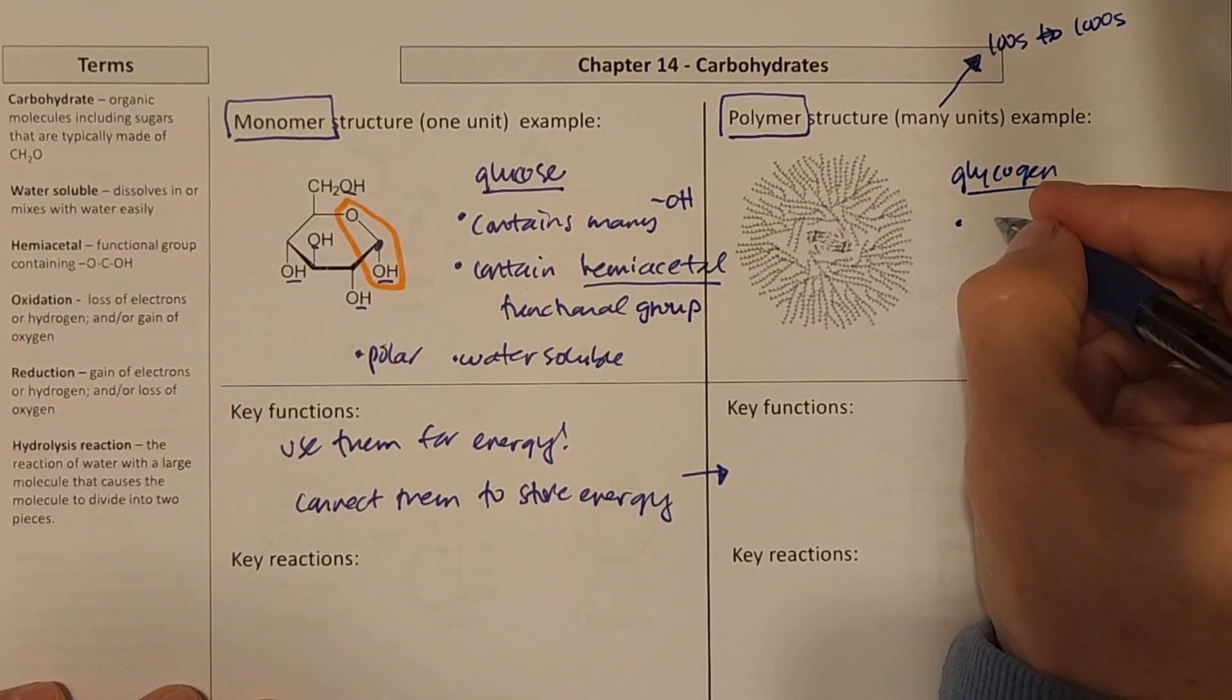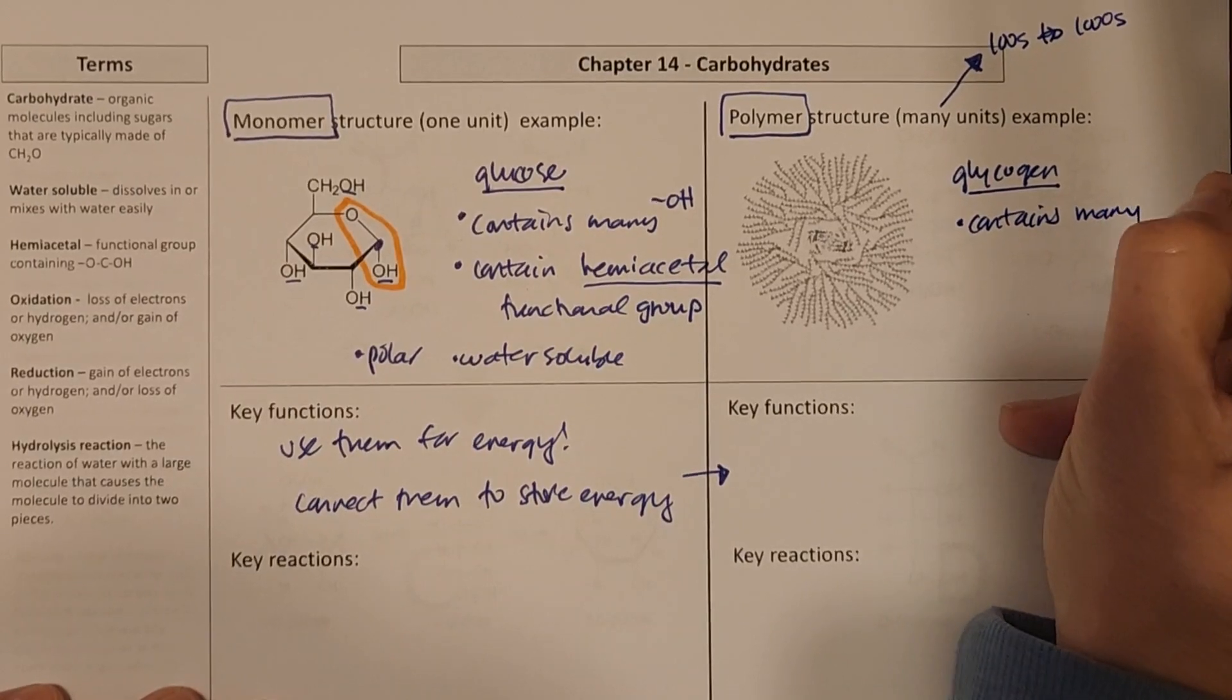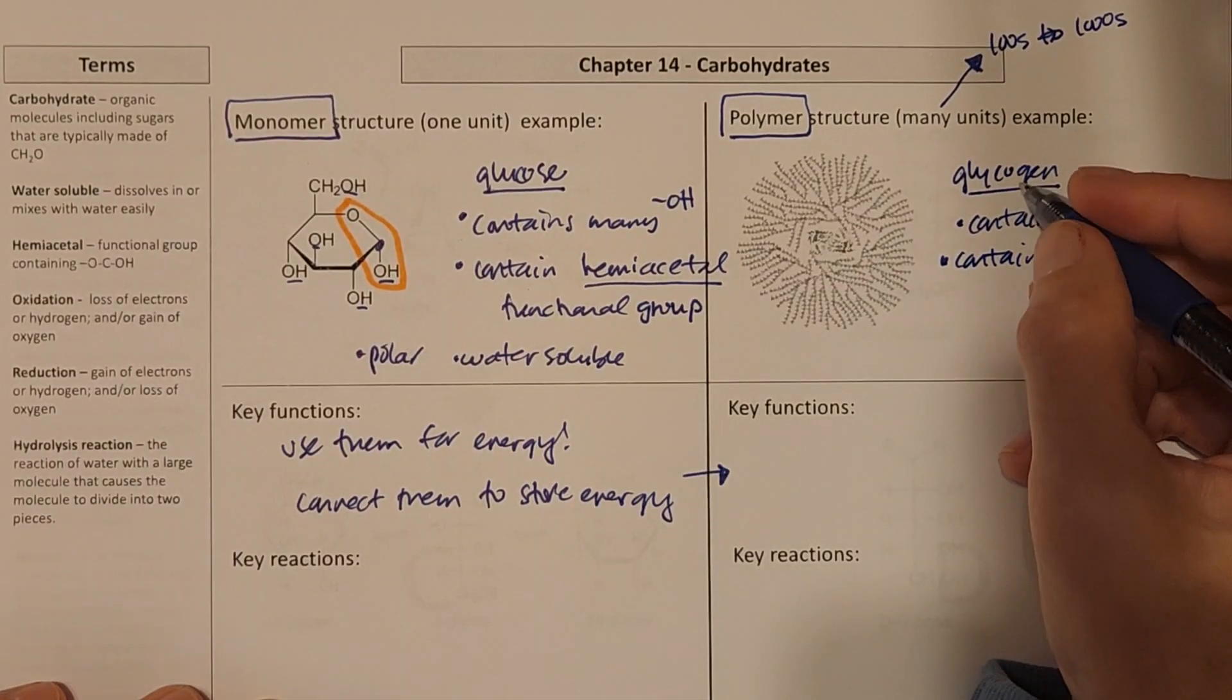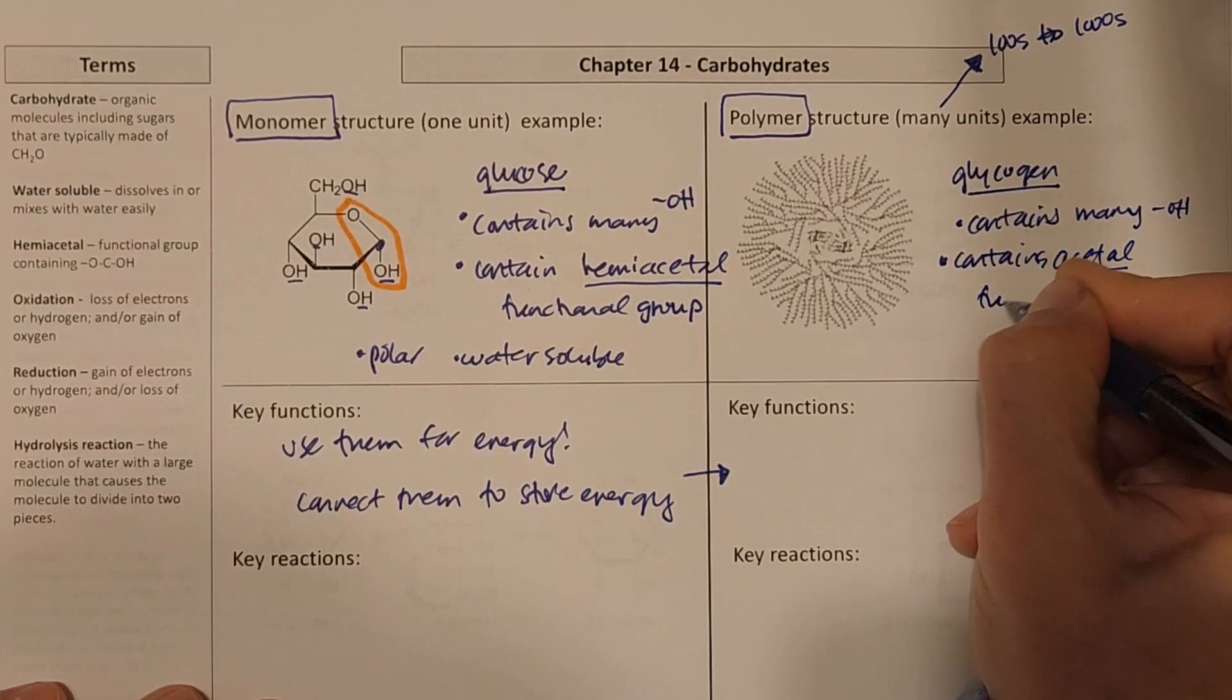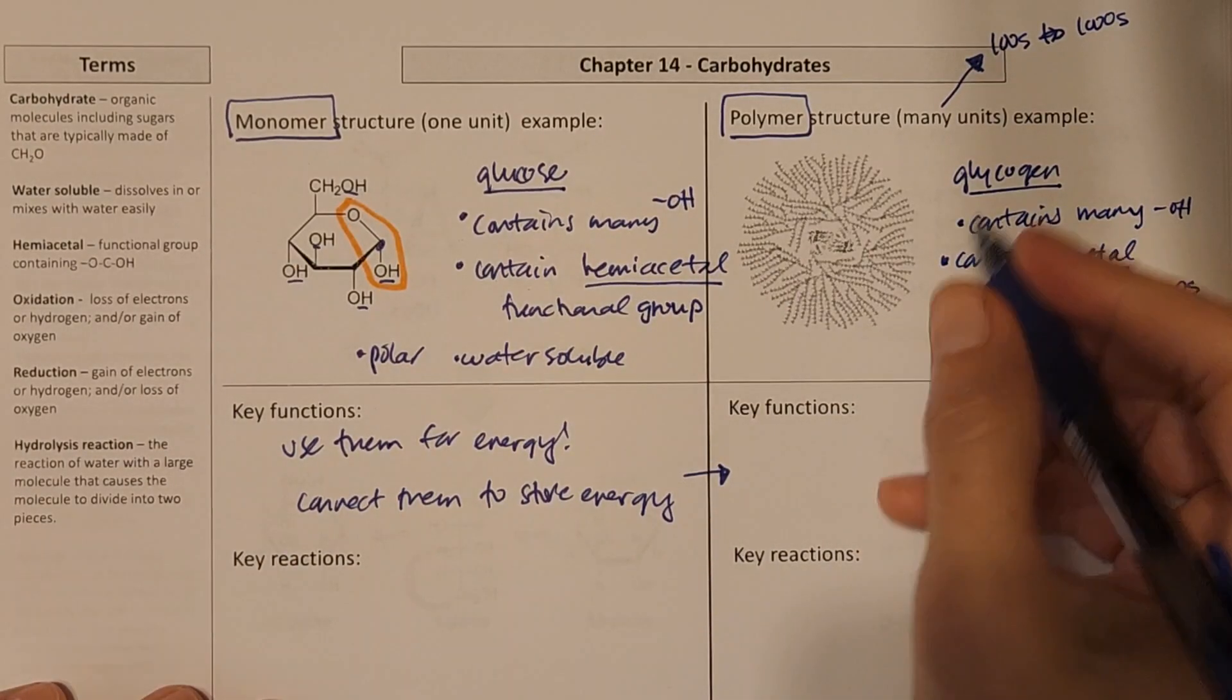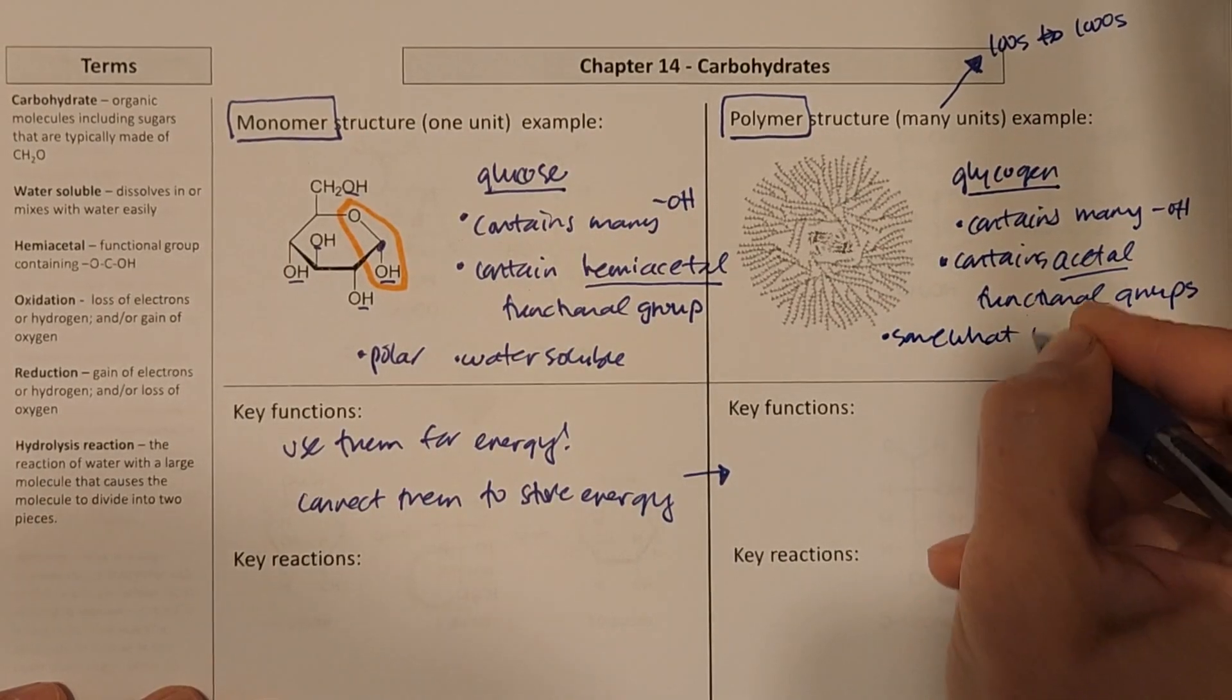Glycogen also contains many OHs, but it contains instead of hemiacetals, it contains mainly acetal functional groups, which we'll see in more detail later in the lecture. And somewhat polar because of all of those hydroxyls.